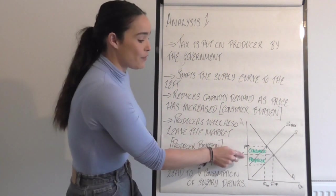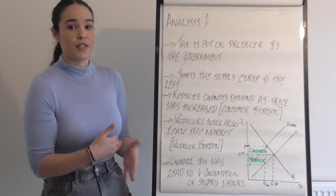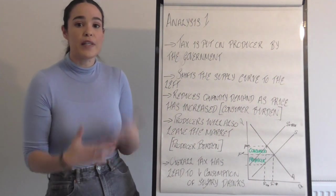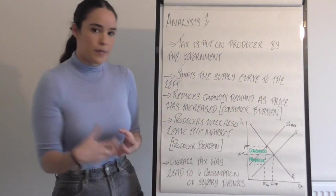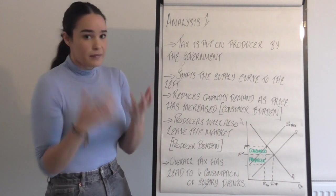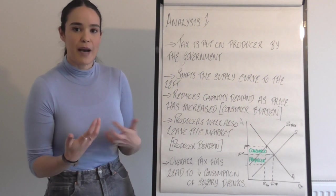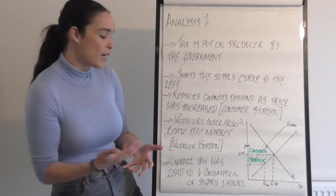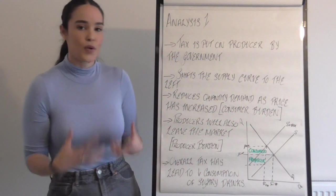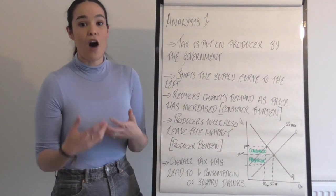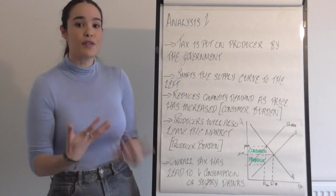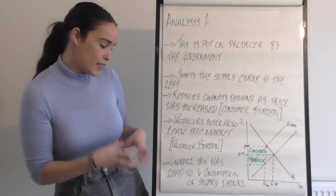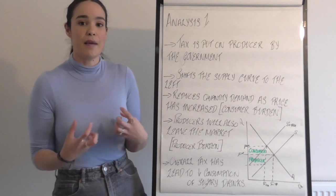The price increase causes a movement along the demand curve to the left, so quantity demanded falls. Producers are also going to leave the market because the tax costs them more, reducing the amount of supply brought to market. So we have a fall in consumers and a fall in producers, leading to an overall decrease in quantity demanded. Since sugary drinks are a demerit good, the tax has led to a decrease in consumption — which is exactly what the government wants.